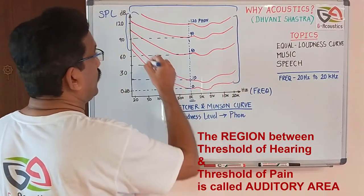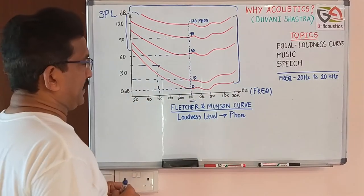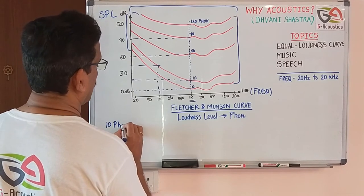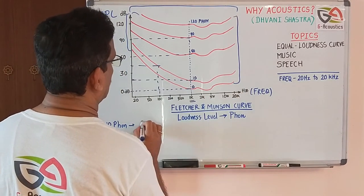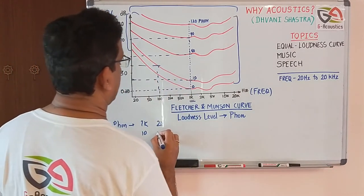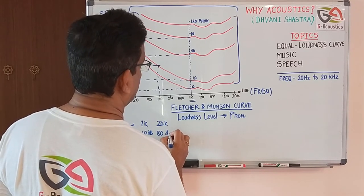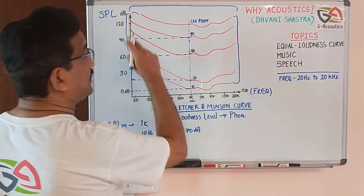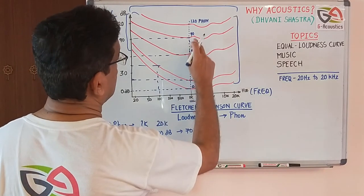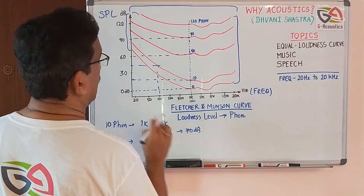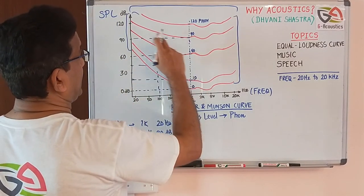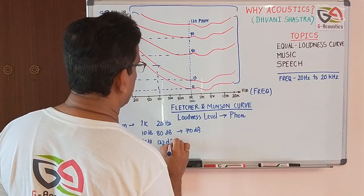The entire region between the hearing threshold and the threshold of pain is called the auditory area. Now, comparing two curves: on the 10-phon curve, at 1 kilohertz it is 10 dB, but at 20 hertz it is about 80 dB — almost a 70 dB difference. On the 90-phon curve, at 1 kilohertz it is 90 dB, and at 20 hertz it is approximately 122 dB — a difference of about 32 dB.